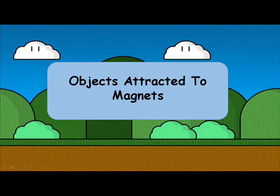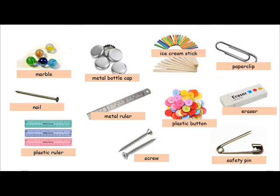Now let's look at objects that are attracted to magnets. We have a few examples of objects here: marble, metal bottle cap, ice cream stick, paper clip, nail, metal ruler, plastic button, eraser, plastic ruler, screw, and safety pin. Which of these objects are attracted to magnets?